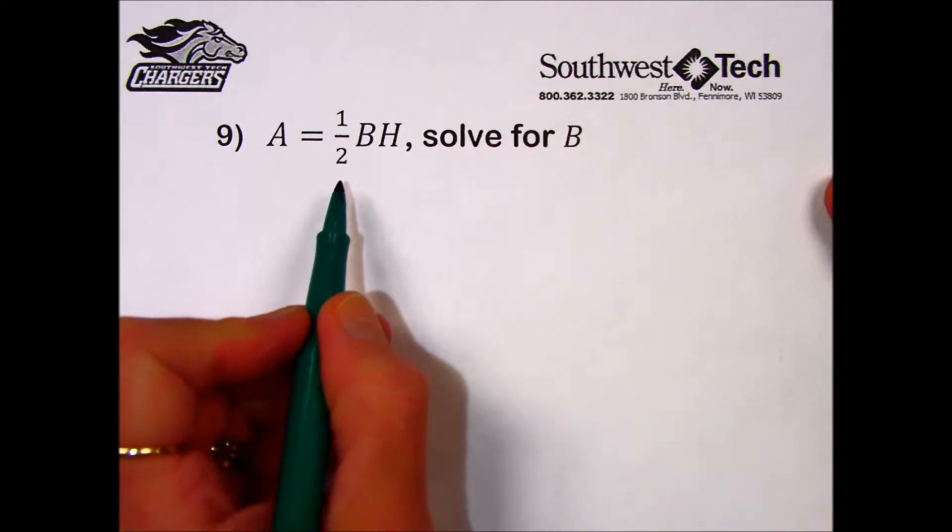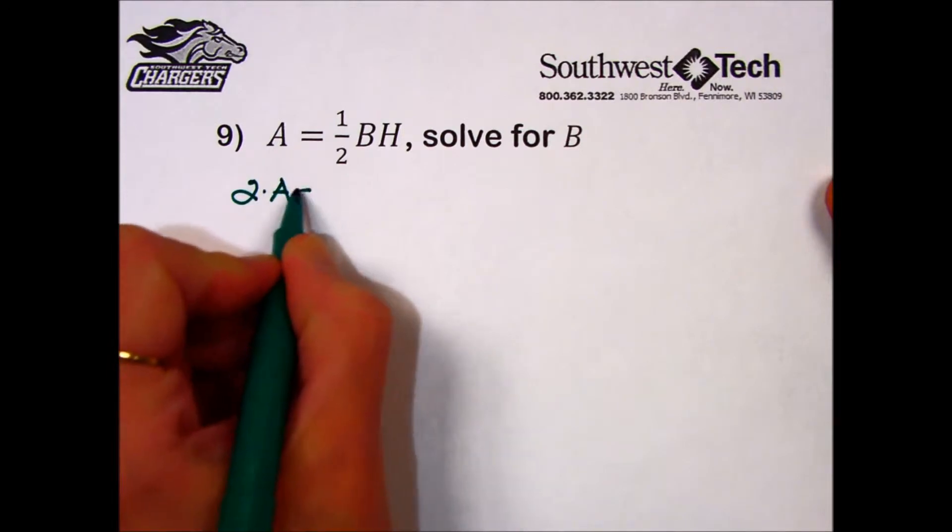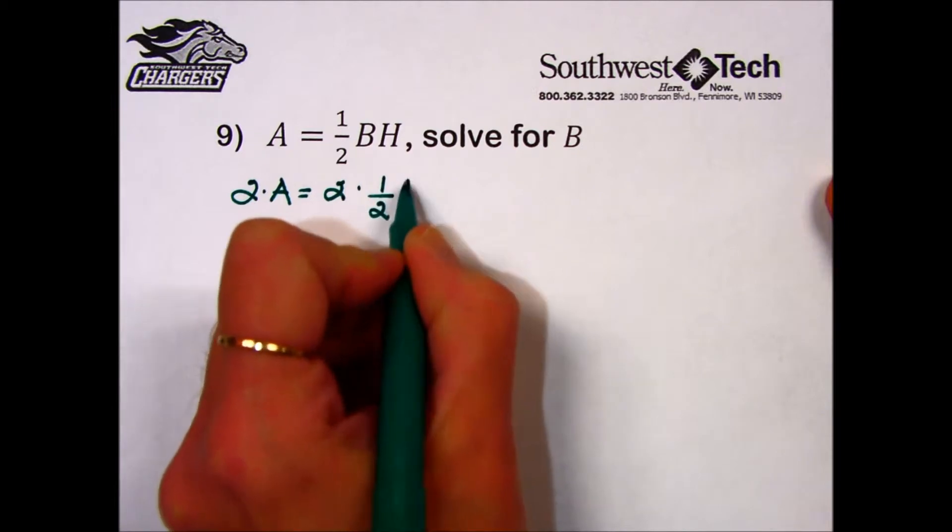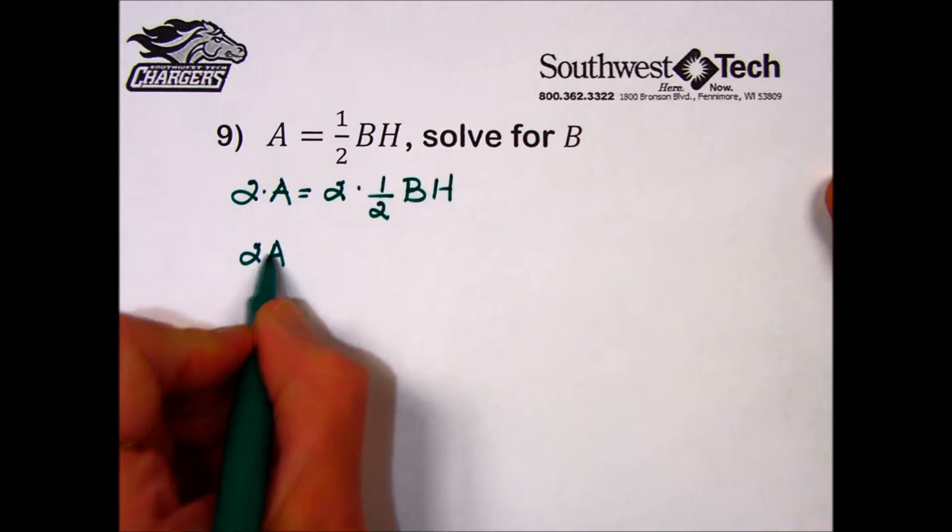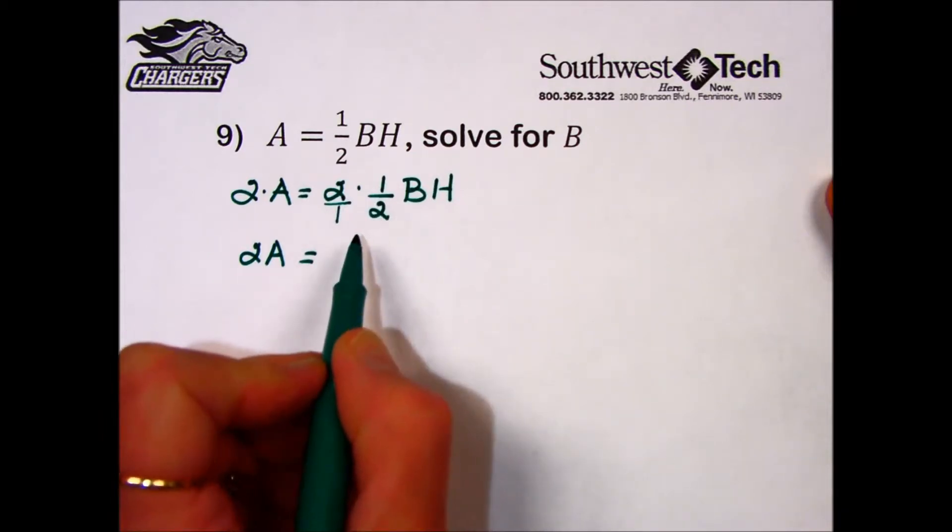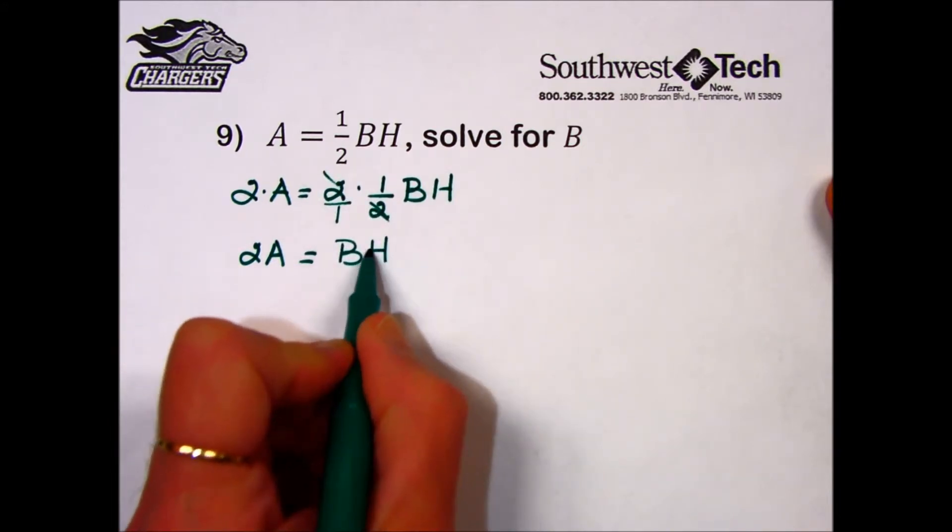So the first thing I'm going to do is multiply both sides of the equation by the reciprocal of the fraction one-half, which in this case is 2. To maintain equality, both sides will get multiplied by the reciprocal of the one-half. 2A on the left is the result of the multiplication. On the right-hand side, we have 2, which has a denominator of 1, times the fraction one-half, resulting in a 1. These will cancel one another out, leaving 1 times BH, or simply BH.